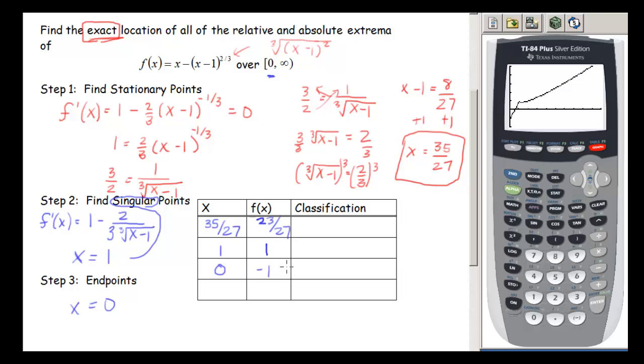This point here, this is an endpoint. But more importantly, if I look at my graph, this is the absolute minimum y value. So this is our absolute min because it's our smallest y value overall.